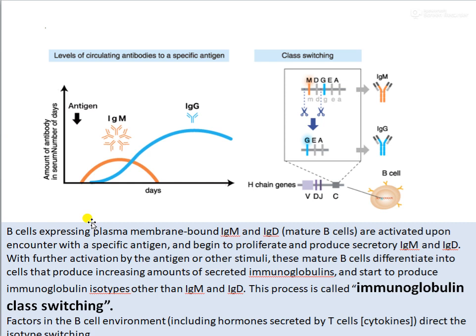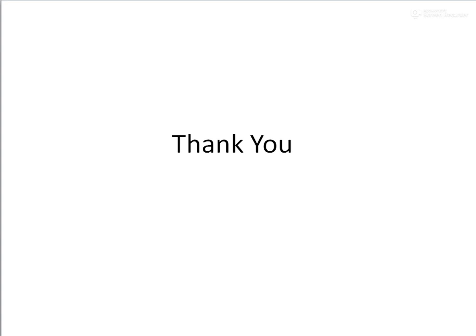In summary, when an antigen enters your body, the first class of antibodies formed is IgM. After that, it gets converted into different classes: IgD, IgG, IgE, and IgA. The different classes are produced from the same mature B cell, with the heavy chains being changed. This process is called immunoglobulin class switching, where genes involved in heavy chain formation undergo recombination, producing different types of immunoglobulins during different stages of infection. With this, we come to the end of a basic outline of the structure and types of immunoglobulins.